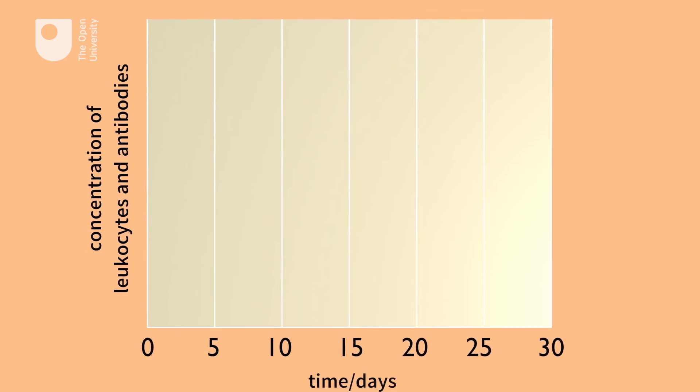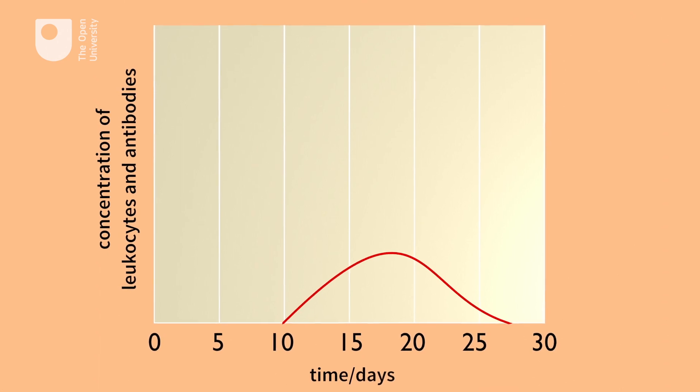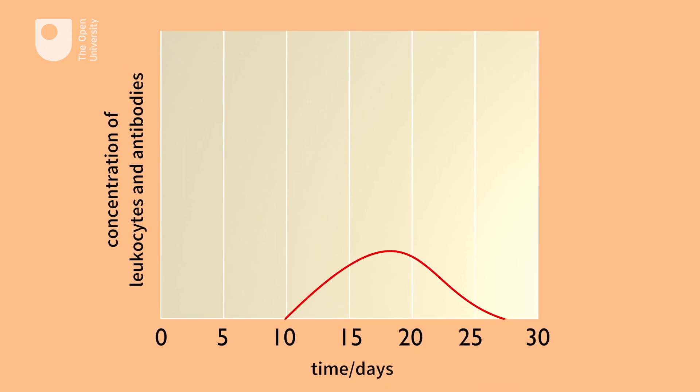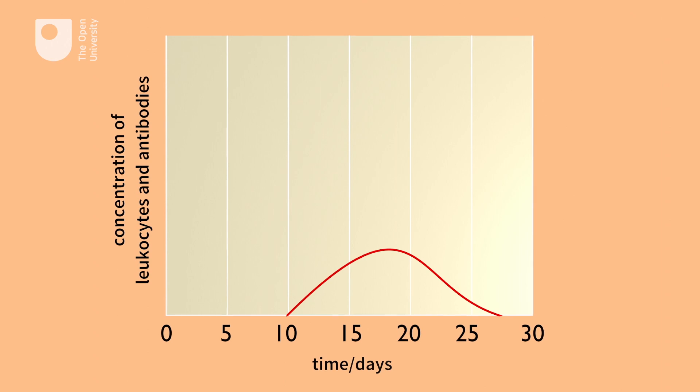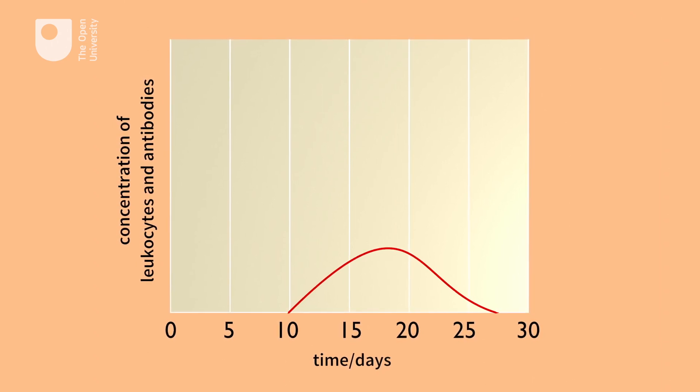Let's take a closer look at some graphs that illustrate this phenomenon. This graph shows the first encounter with a pathogen, which might be, for example, the chickenpox virus. If we chart the number of antibodies and leukocytes the body produces on the vertical axis over time on the horizontal axis,